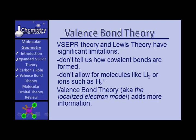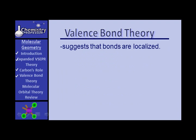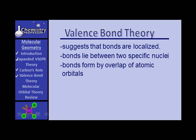Valence bond theory, also known as the localized electron model, is the first of two theories we're going to look at that will give us more information about bonding. Valence bond theory suggests that bonds are localized — they specifically lie between two nuclei. The bonds form by overlap of atomic orbitals.